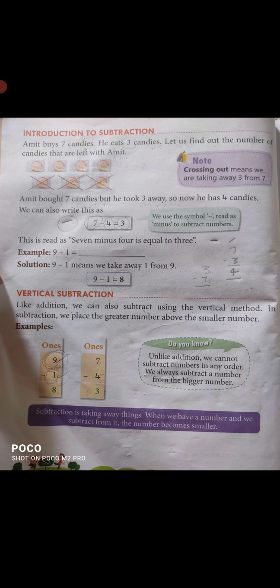Vertical subtraction: like addition, we can also subtract using the vertical method. We place the greater number above the smaller number. हम हमेशा greater number में से smaller number को minus करते हैं। For example, 9 is the greater number and 1 is the smaller number, so 9 minus 1 answer will be 8. Subtracting is taking away — when we subtract from a number, the number becomes smaller.